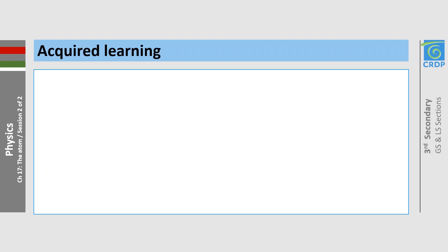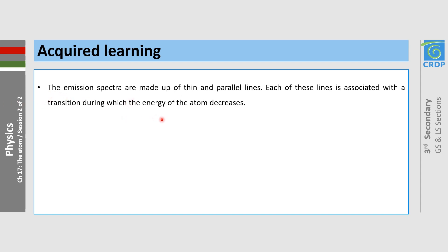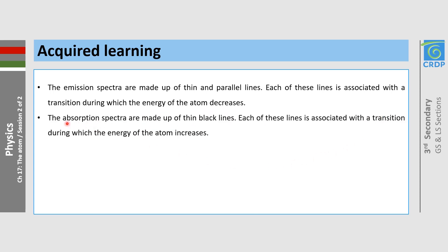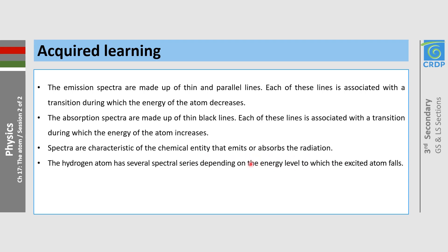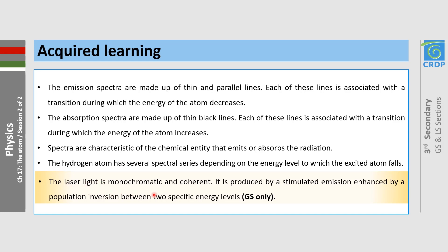What have we learned in this session? First, emission spectra are made up of thin and parallel lines; each of these lines is associated with a transition during which the energy of the atom decreases. Second, absorption spectra are made of thin black lines; each line is associated with a transition during which the energy of the atom increases. Third, spectra are characteristic of the chemical entity that emits or absorbs the radiation. Fourth, the hydrogen atom has several spectral series depending on the energy level to which the excited atom falls. Finally, laser light is monochromatic and coherent; it is produced by stimulated emission enhanced by a population inversion between two specific energy levels.